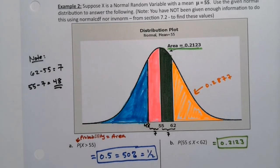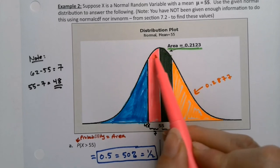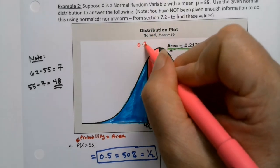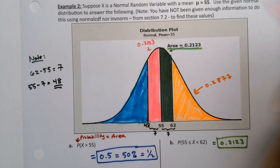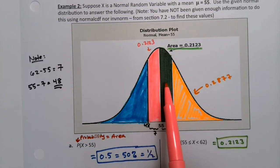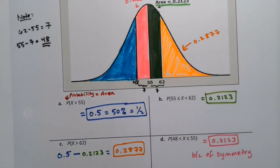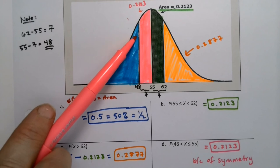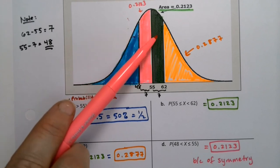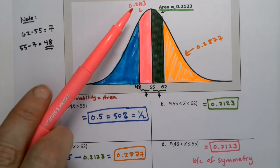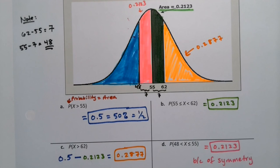So the question they're asking is, what's the probability that 48 is less than X, which is less than 55? So what they're really asking for is, what's the area of the pink zone? But the pink zone is symmetric to the zone we already have. So this zone right here is symmetric. Because of symmetry, it also has to be 0.2123. Because that's identical to this zone. So that answers your question right here. This is 0.2123 because of symmetry.